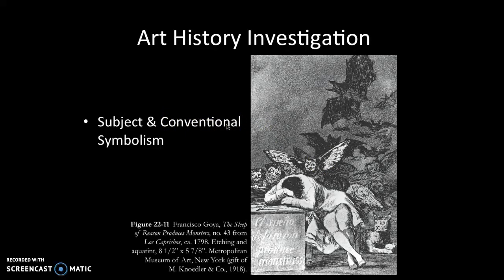When we look at a work like this, we can pretty quickly identify the subject: there's a person with their head down, some owls, some bats, and some sort of large cat. We can recognize the subject. What takes more work is figuring out the symbolism — what do bats, owls, and cats mean? We can guess that bats and owls tend to be nocturnal and a little scary. But if we were to read about the artist, which you could do in chapter 22, we'll learn more about what he intended those to mean.